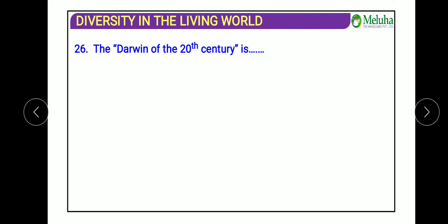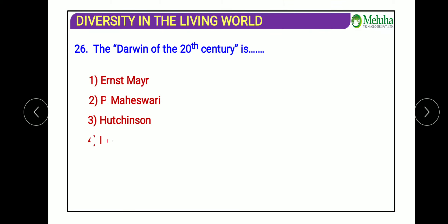The last question: who is called the Darwin of the 20th century? The answer is Ernst Mayr. He was the person who gave the biological definition of a species. So Ernst Mayr is called the Darwin of the 20th century. This completes the objective question discussion for Chapter 1: The Living World.